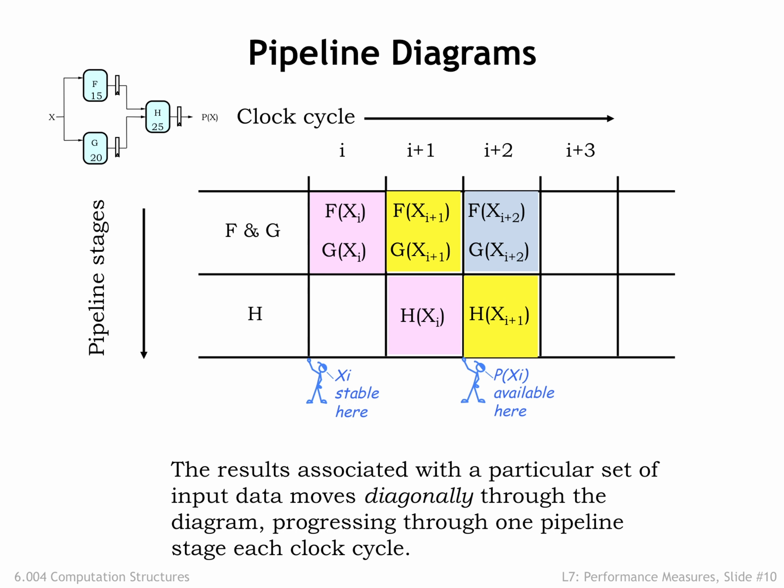The processing continues cycle after cycle, producing a new output every clock cycle. Using the pipeline diagram, we can track how a particular input progresses through the system or see what all the stages are doing in any particular cycle.